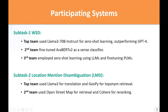For the location mention disambiguation task, the top team translated location mentions into English using LLaMA3 and then used GeoPy for toponym retrieval, while the second team used OpenStreetMap for retrieval and Cohere for re-ranking.